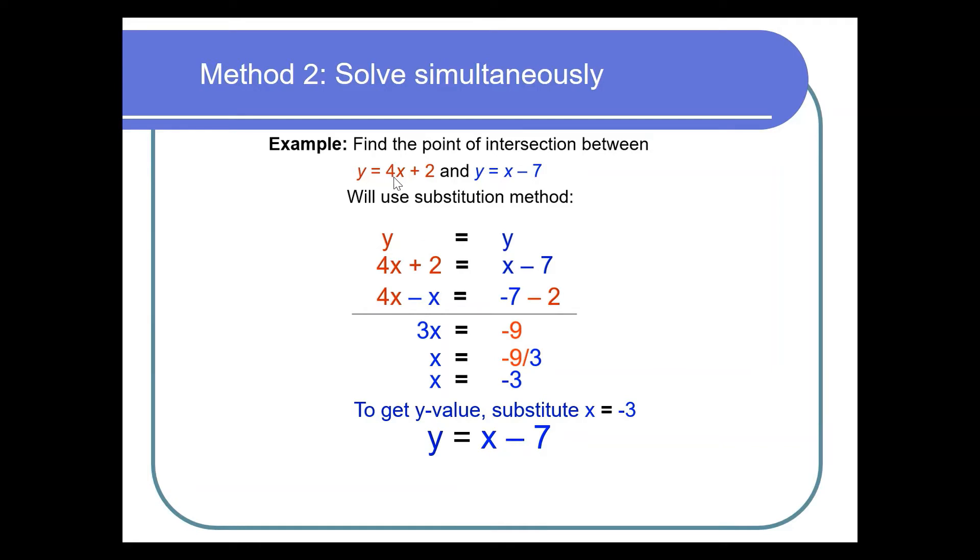It's easier to use y = x - 7 because it's pretty straightforward. So what I'm doing is I'm substituting x with negative 3. So -3 - 7 will give you y value of -10, and then we'll put this together. The point of intersection is (-3, -10). I do suggest you pause the video and do it yourself first and see if your answer matches with this one.